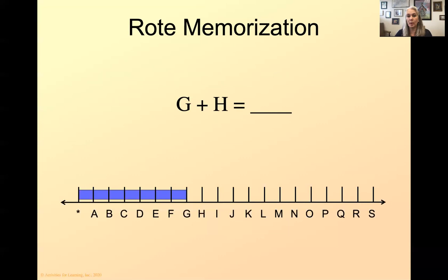I've got G plus H. I have to use my one-to-one correspondence here. A, B, C, D, E, F, G, H. So I happen to have done correct one-to-one correspondence. And then we can see that the answer is O. So G plus H is O. Everybody comfortable? Okay.